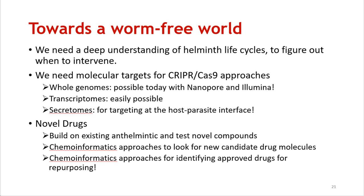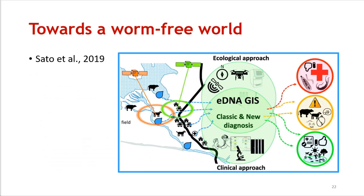So how can we head towards a worm-free world? We need to actually do all these things, and this can be summarized by the graphic developed by Sato et al. as his graphic abstract. We need to find the worms using GIS location, sequence them or understand their molecular targets for intervention strategies, develop diagnostic kits that can rapidly identify the species, and then apply medication to infected people — and then hopefully we will head towards a worm-free world.